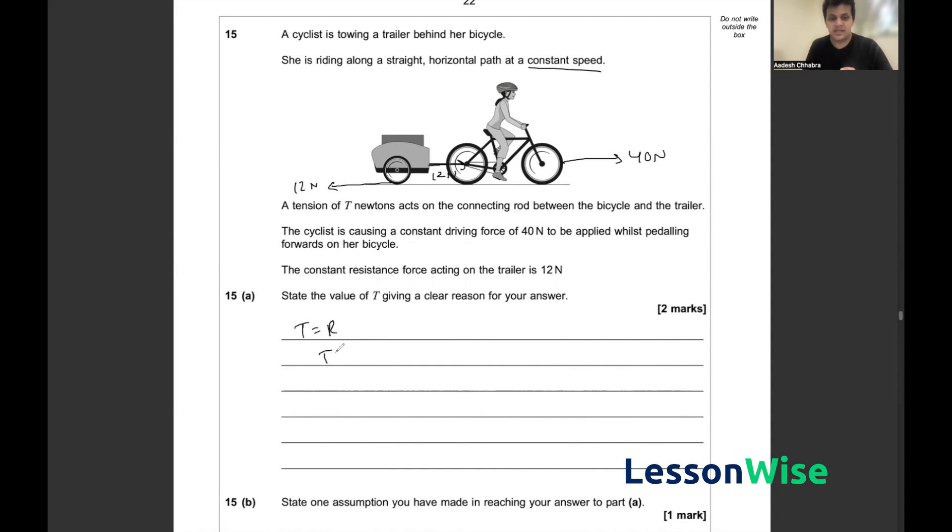That means that T would be equal to R, essentially meaning T is equal to 12 newtons. We have to state our reasoning here—essentially, constant speed of the trailer means forces are balanced, and that should be enough to yield you the two marks of this part.